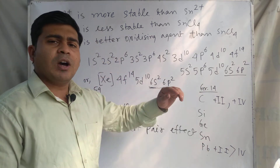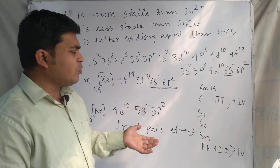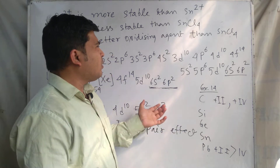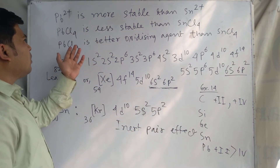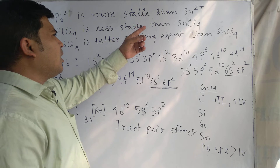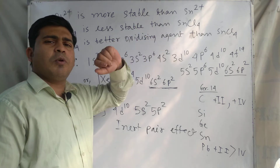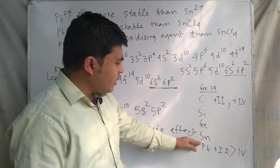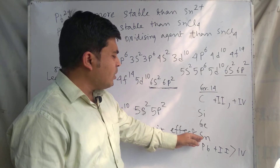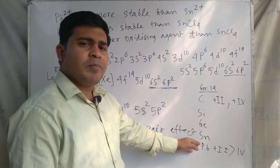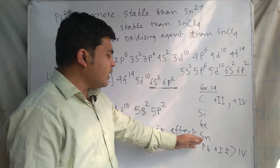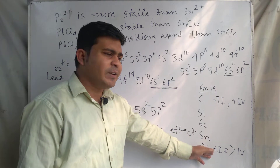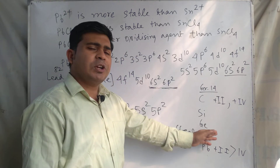Because Pb²⁺ is the more stable oxidation state, Pb⁴⁺ easily gains electrons to become Pb²⁺. For this reason, PbCl₄ is less stable than SnCl₄, because lead is below tin in Group 14. Therefore, the stability of the +2 oxidation state is greater for lead than for tin.